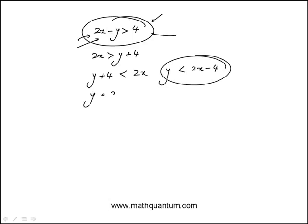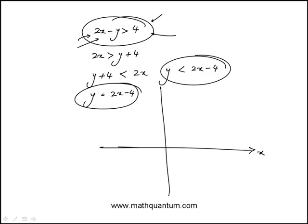So the equation of the line that this inequality corresponds to is y equals 2x minus 4. And I'm going to draw this roughly in the xy plane.